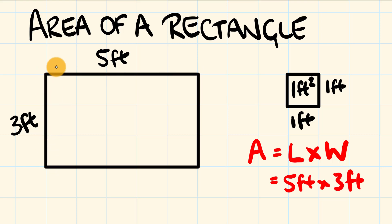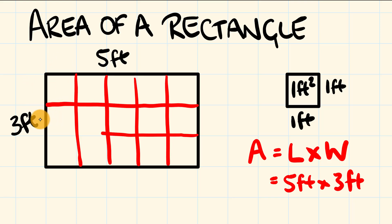And I can mark these in as we go. So we have five feet, one, two, three, four, five, multiplied by three feet, one, two, three. And this is equal to five times three, fifteen feet squared.